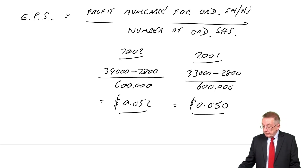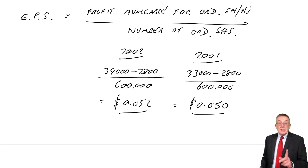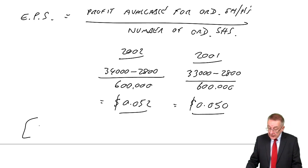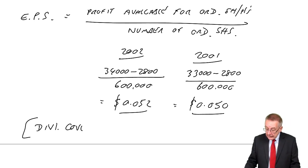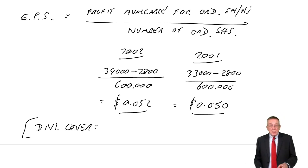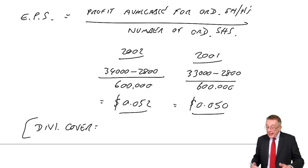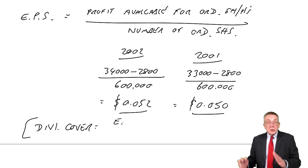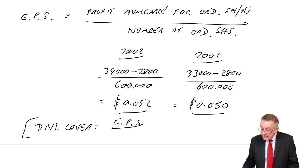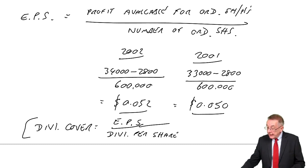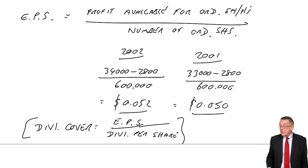Going back to dividend cover: we calculated it in totals earlier, but you can do it either way. You can either do total earnings divided by total dividend, or earnings per share divided by dividend per share. Apart from possible roundings, you'll end up with exactly the same figures for dividend cover.